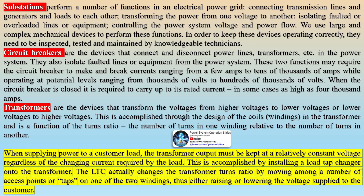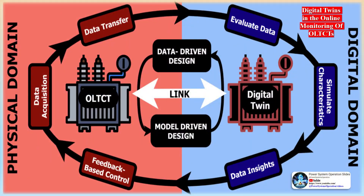Circuit breakers and LTCs are mechanical devices with numerous moving parts that will wear over time due to movement and the amount of current they interrupt. LTCs are required to move more often than circuit breakers and may interrupt more current overall. For example: a breaker may operate once a year interrupting 5000 amps, while an LTC operating 50 times or more per week interrupting 100 amps each time also accumulates 5000 amps interrupted — but per week.